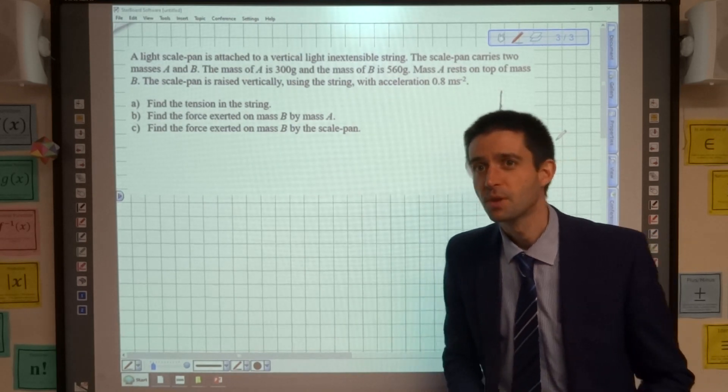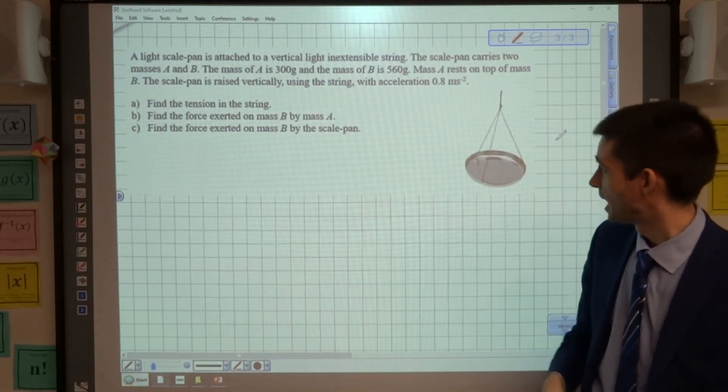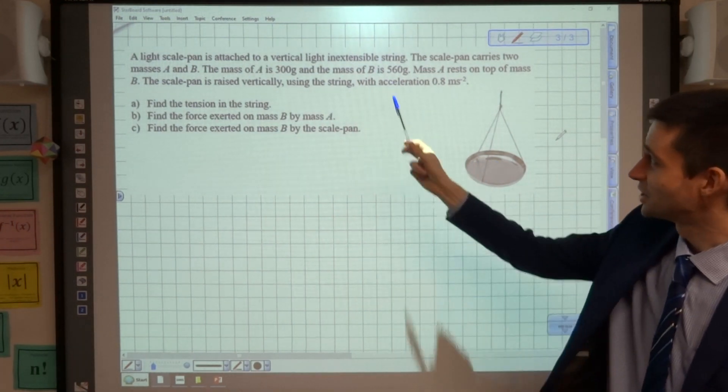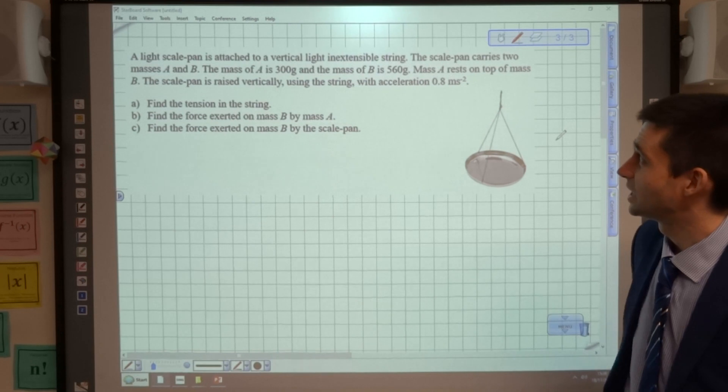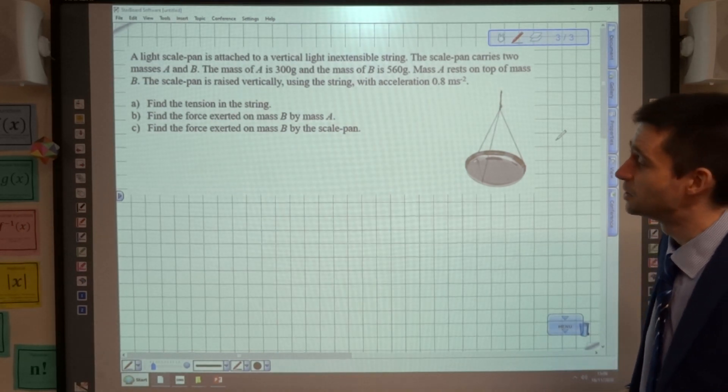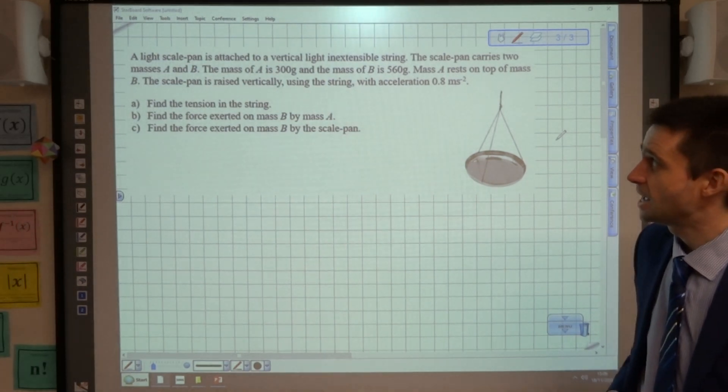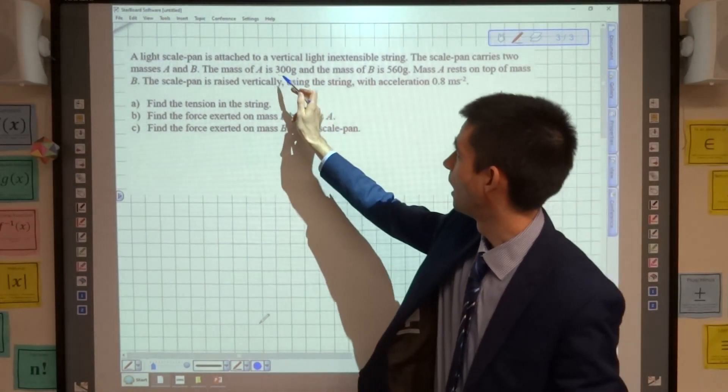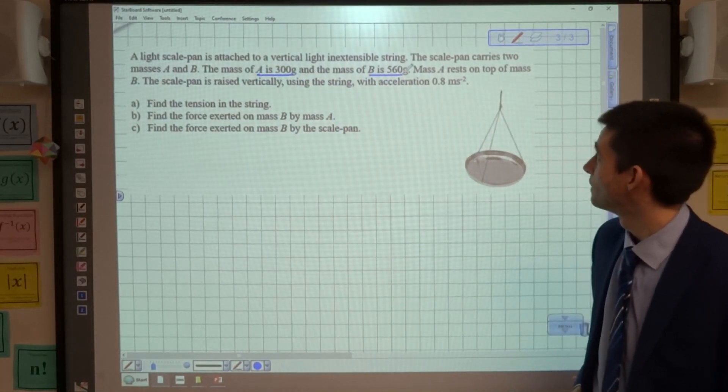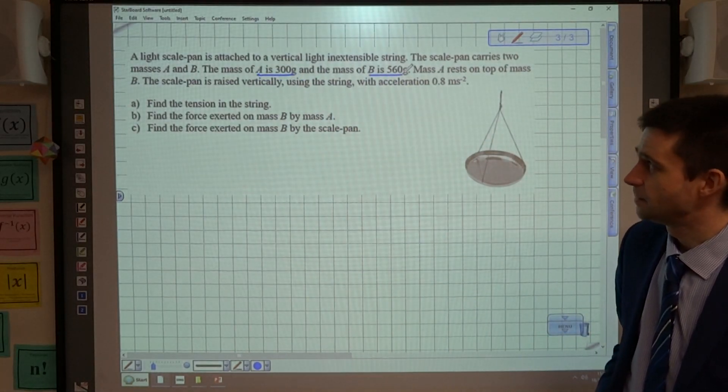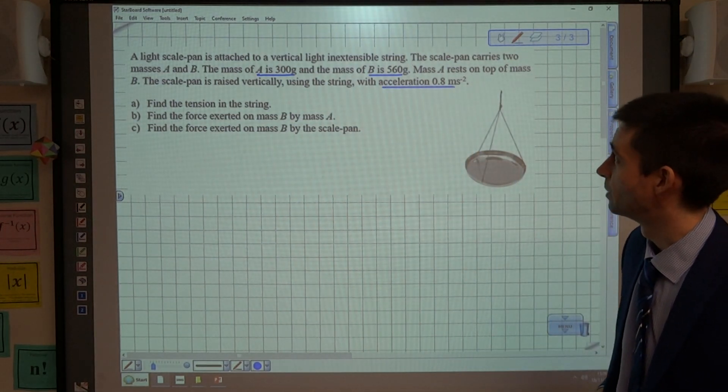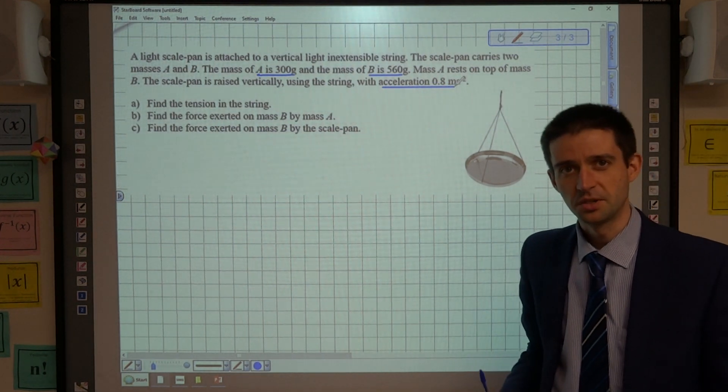lifted in a scale pan. So here we have a light scale pan, that's what one looks like by the way, students often don't know what they look like when we have scale pan questions, is attached to a vertical light inextensible string. The scale pan carries two masses A and B, the mass of A is 300 grams and the mass of B is 560 grams. Mass A rests on top of mass B, the scale pan is raised vertically using the string with acceleration 0.8 metres per second per second.